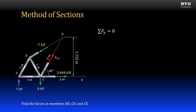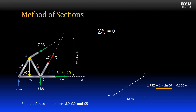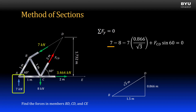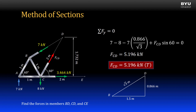Now I will sum forces to zero in the y direction to get the last unknown force. I will need the vertical component of the force in member BD, so I will do a little trigonometry first. Here is a right triangle with member BD as the hypotenuse. The horizontal leg is 1.5 meters, and the vertical leg — equal to the vertical distance from D to E minus the vertical distance from B to C — is one meter times the sine of 60 degrees, giving 0.866 meters. The length of BD is found with the Pythagorean theorem. Summing forces in the y direction: positive 7 kN minus 8 kN minus the vertical component of force BD plus the vertical component of force CD equals zero. Solving for force CD, I get 5.196 kN, so member CD is in tension.